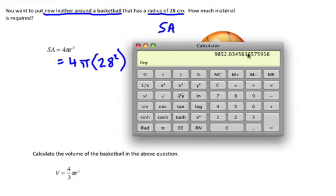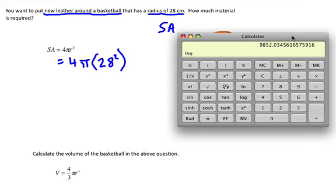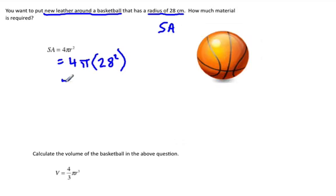You get an answer of, and if you round this to one decimal place, it's going to be 9,852 centimeters squared, because the units for area are centimeters squared.